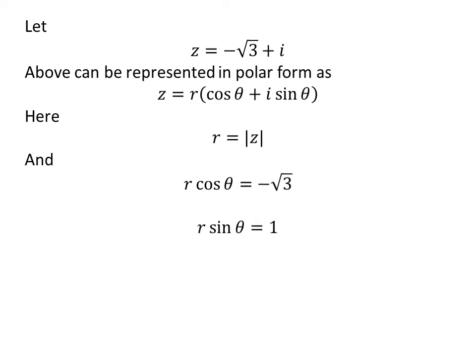Here, r is equal to modulus of z and r times cosine of theta is equal to minus square root of 3 and r times sine of theta is equal to 1.